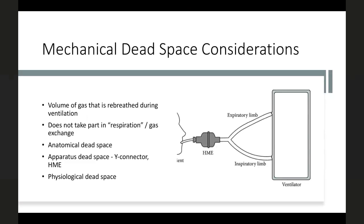Mechanical dead space is another consideration. An invasive endotracheal tube reduces anatomical dead space by around 100 ml, but apparatus dead space — the circuit including the endotracheal tube, HME, and components up to the Y-piece — adds dead space. Physiological dead space is where ventilation occurs but gas exchange does not, which always matters in diseased lung. Get a blood gas to assess PO2 and PaCO2 and adjust accordingly.